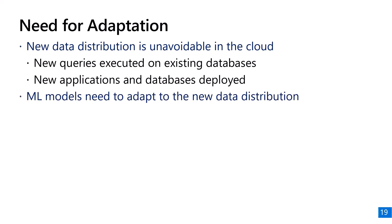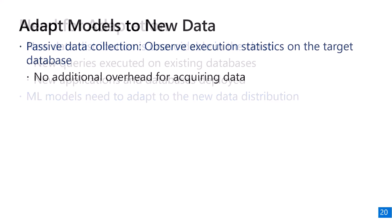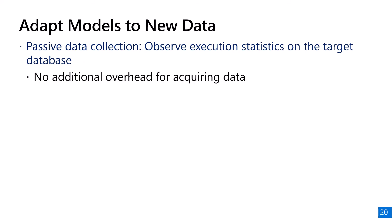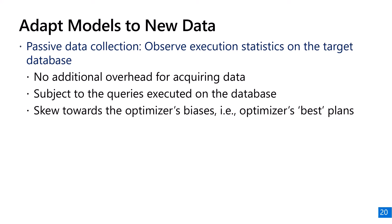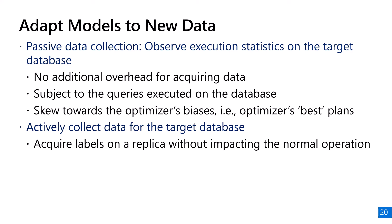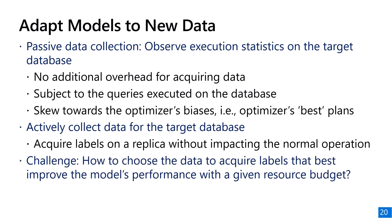Unfortunately, such new data distributions are unavoidable in production due to new queries on existing databases and new databases deployed in the cloud, so the machine learning model needs to adapt by retraining with new data. By default, we can observe databases in production and collect execution statistics passively with no additional overhead. However, the data collected is skewed towards whatever the customer executes and biased by the optimizer's cost estimates. Alternatively, we can actively collect data by executing additional queries on a replica — but given a resource budget, how do we best choose which data to acquire to improve model performance?